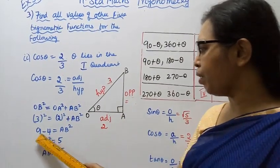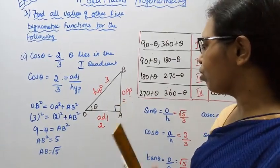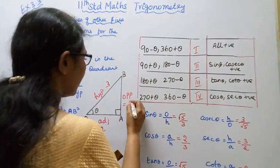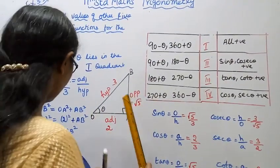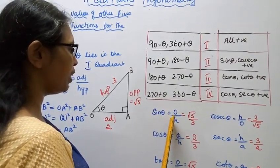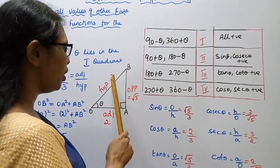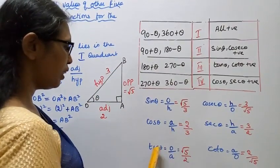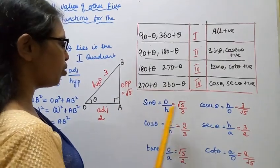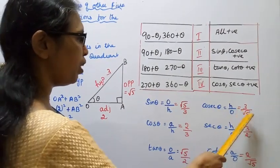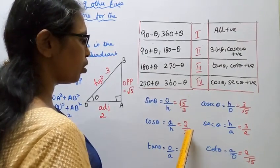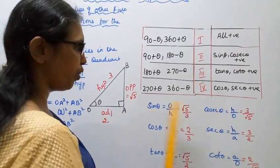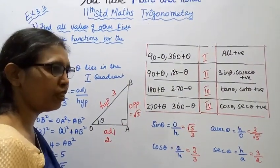By Pythagoras theorem: 3 squared equals 9, 2 squared equals 4, so opposite squared equals 9 minus 4 equals 5, giving AB equals root 5. All values are positive in the first quadrant, so sin theta equals opposite by hypotenuse equals root 5 by 3, tan theta equals root 5 by 2.